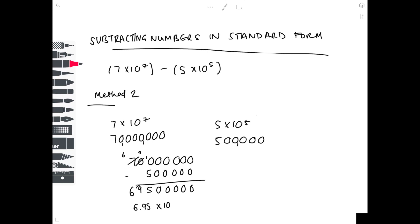Then we need to reinsert that decimal place and count how many times we've moved that decimal place: 1, 2, 3, 4, 5, 6, 7. So it becomes 6.95 times 10 to the 7, which is the same answer as method 1.